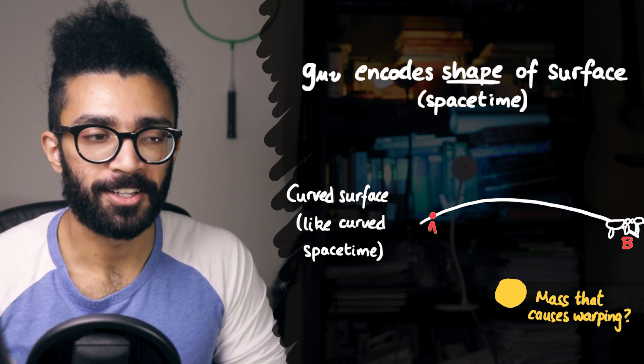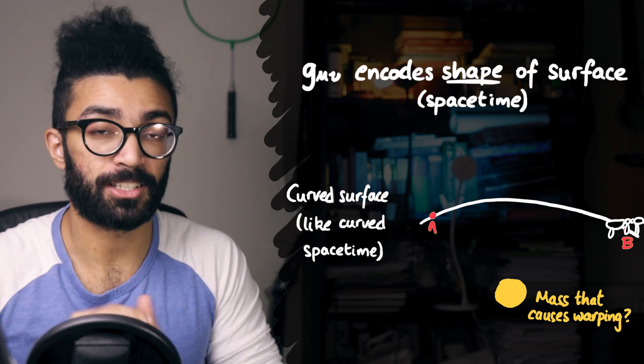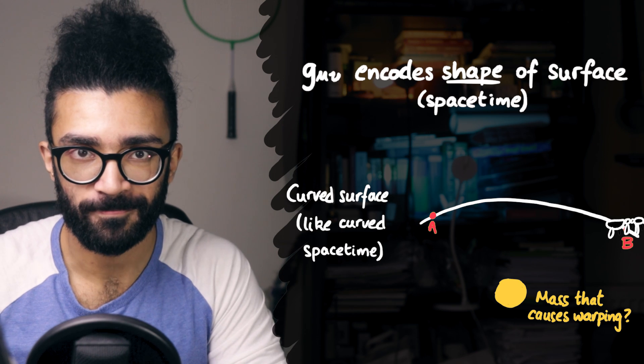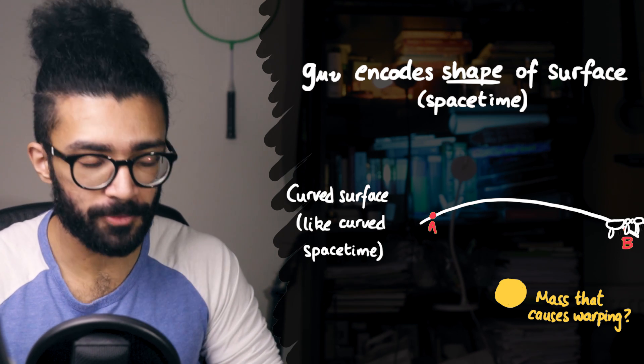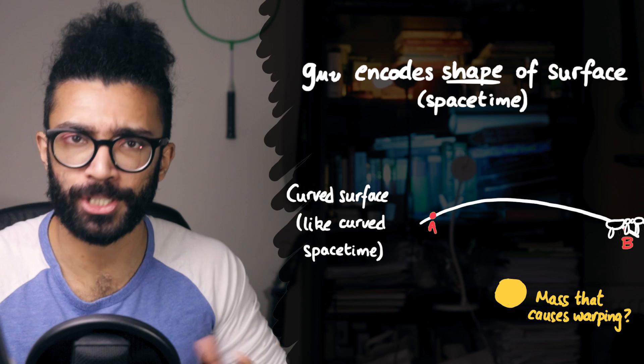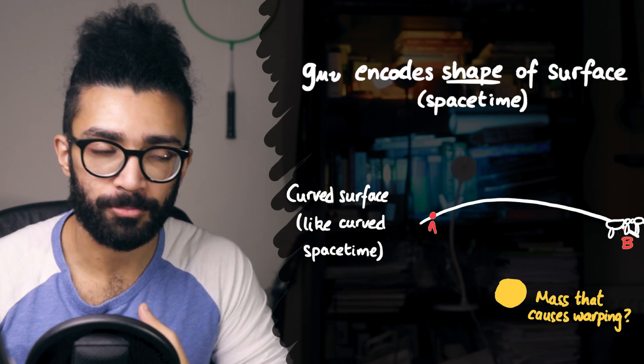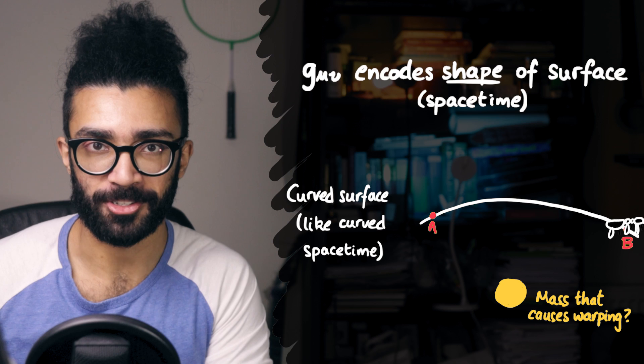But anyway, the important thing, the metric tensor, just tells us the shape of, essentially, the surface the ant happens to be sitting on. It tells us if it's a flat surface or a curved surface, and it tells us exactly what shape the surface basically has. Except, in our case, there's obviously a few more dimensions to be accounting for.